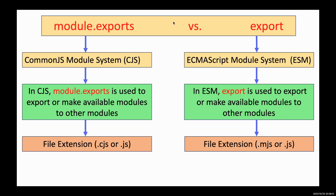From the previous video, we know every file is treated as a separate module in Node.js, and to make its classes, functions, objects, or variables available outside of that file or module, we need to use module.exports or export command so these components can be imported into other files or modules. Both commands are used to export modules in Node.js but they are fundamentally different as they belong to two different module systems: CJS and ESM.